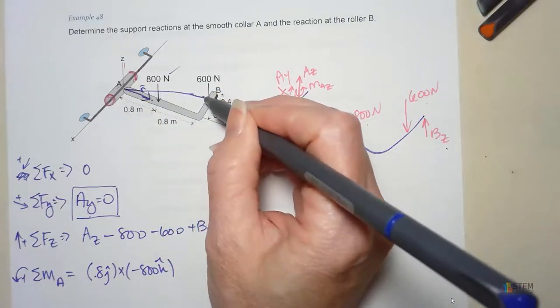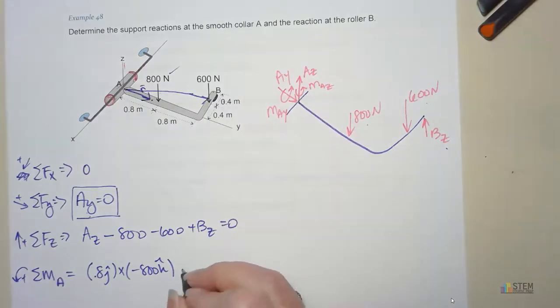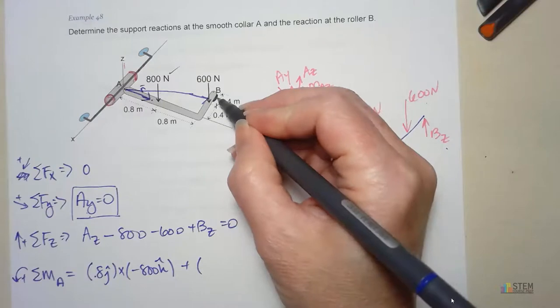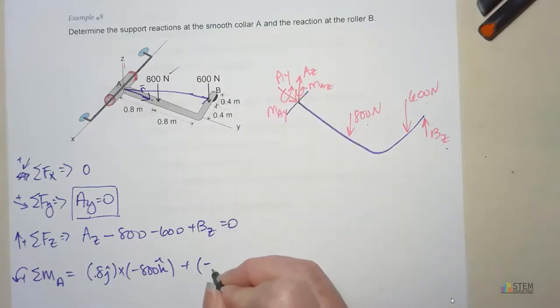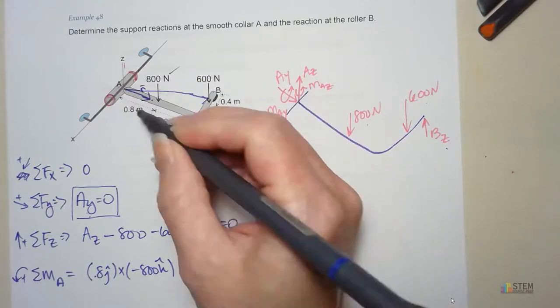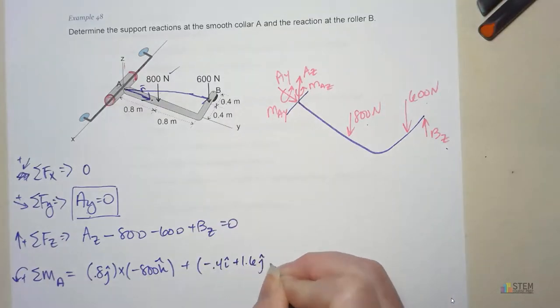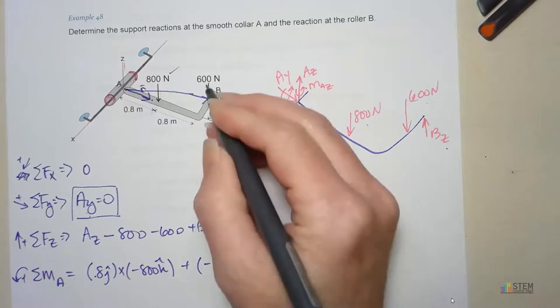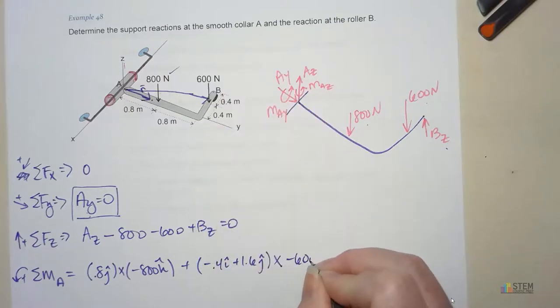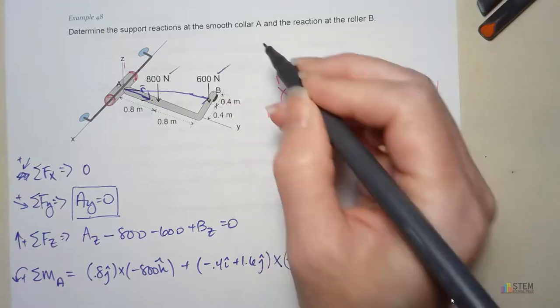Let's do the 600. For this one I need a position vector from A out, it's right there. That position vector, we're going backwards in the X direction, so we'll have negative 0.4I. And then we're going to the right 1.6, so I have 1.6J. Cross that with negative 600 K. That takes care of that one.